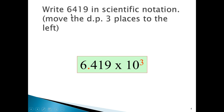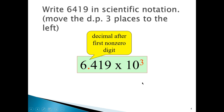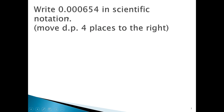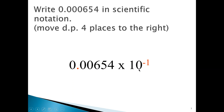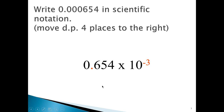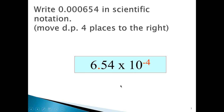In this case we're dealing with a relatively large number, but what if the number was relatively small, such as 0.000654? In order to get the coefficient, we would have to move the decimal point to the right of this 6 — that is, four places to the right. When we move it one place to the right, the exponent becomes negative. Moving it again gives minus 2, then minus 3, and when we get it to where we want it — right to the right of the 6 — the exponent becomes minus 4. So it is 6.54 times 10 to the minus 4.